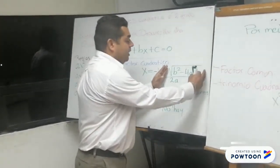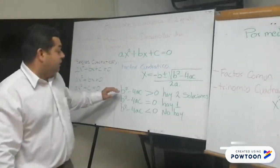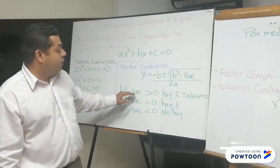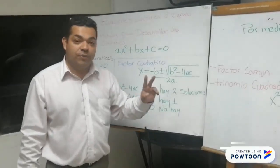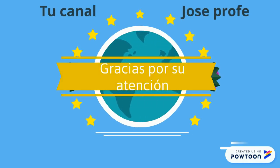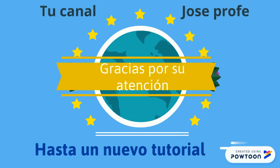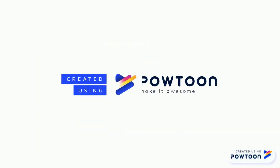En esta parte, hay que tener en cuenta la siguiente regla: si B² menos 4AC es mayor a 0, hay dos posibles soluciones.